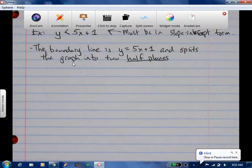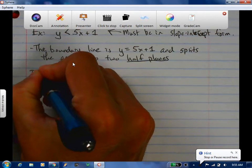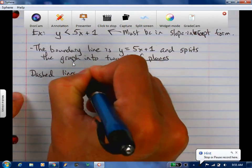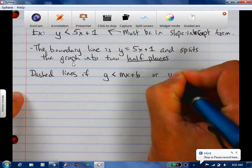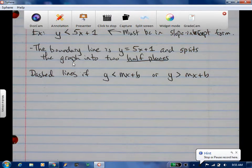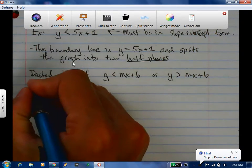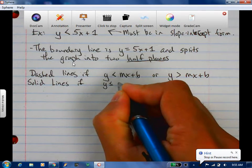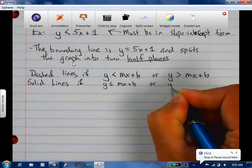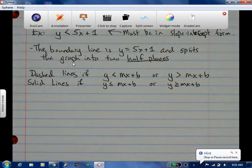So the dashed line is equivalent to the open circle that you've done before. It's going to be a solid line if it's less than or equal to or greater than or equal to. So if it can equal the number, if y can equal what the other side is, you can use a solid line.